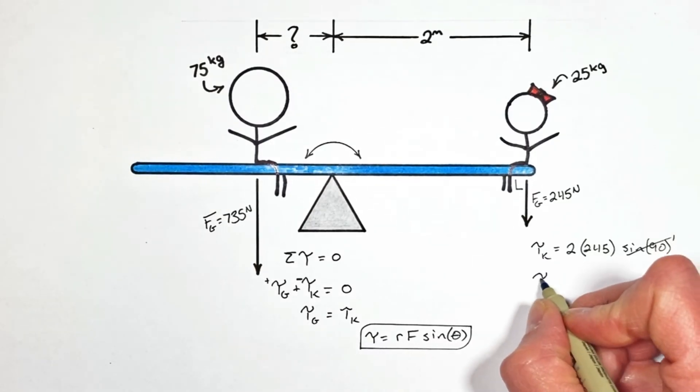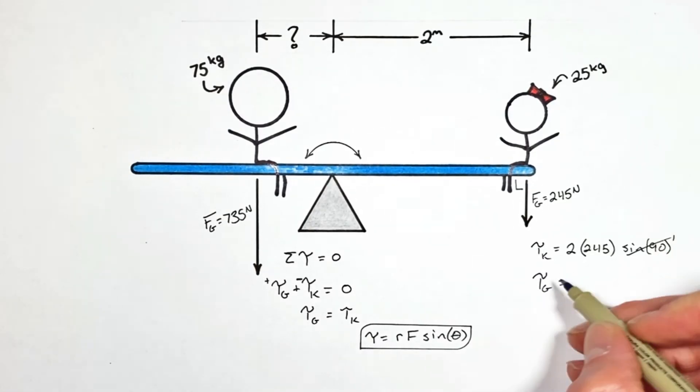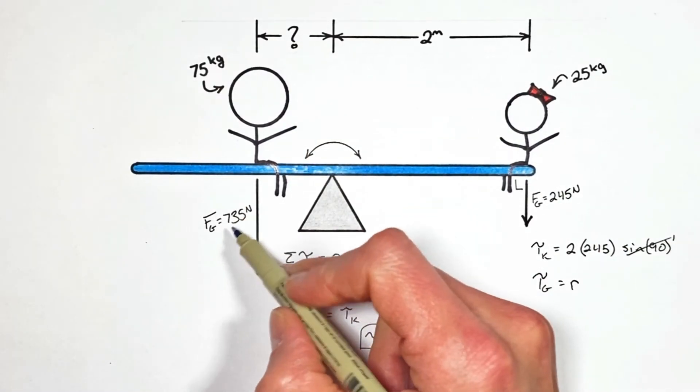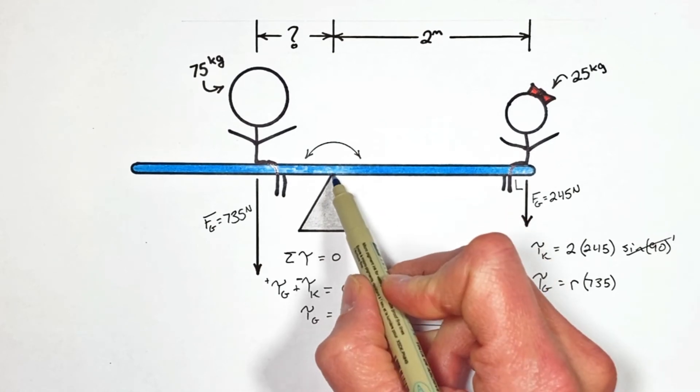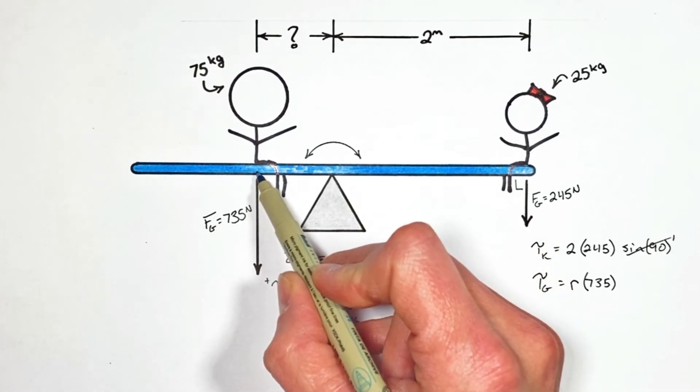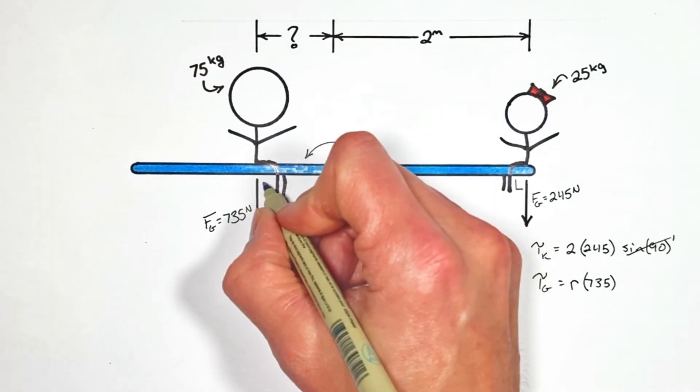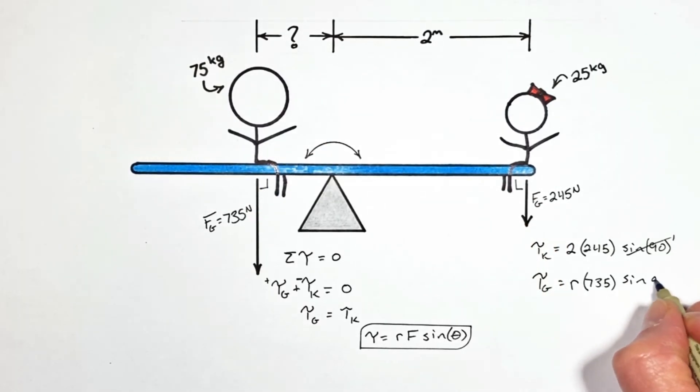Now, when looking at the grown-up, the torque by the grown-up is going to be given by their radius, that's what we're trying to solve for, I'm just going to call that R for now, multiplied by their force, that's 735 newtons. And again, the angle between the radius vector, going from the pivot to the force, and the force itself is, again, 90 degrees, which is still 1.